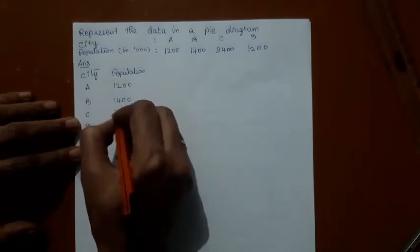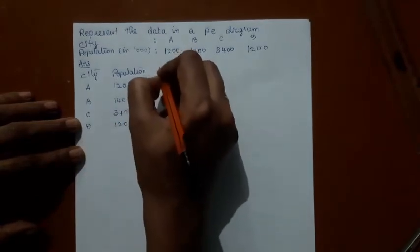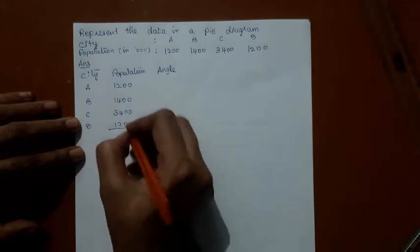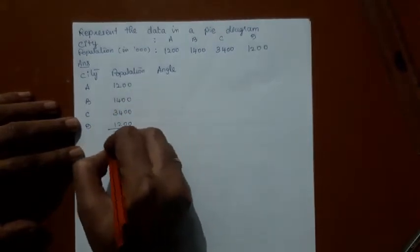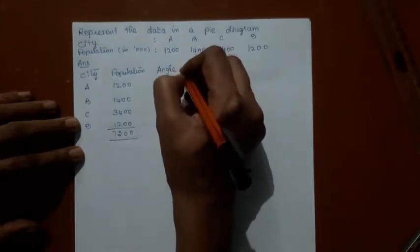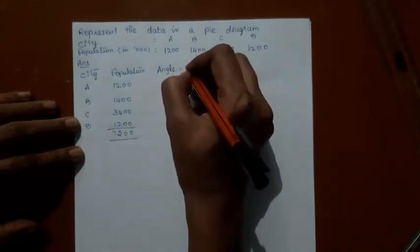Calculate the total of all these observations. The angle is calculated as the value, that is the population, divided by 7200 into 360, because the angle at the center of a circle is 360 degrees.